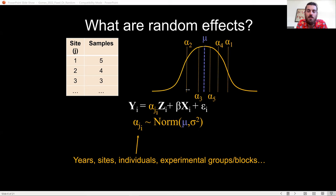And one advantage of this is your model only has to estimate two parameters, mean and variance, instead of the number of sites minus one.